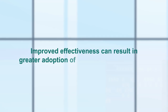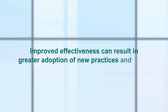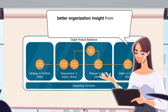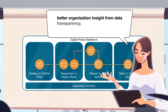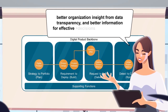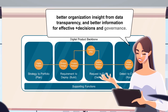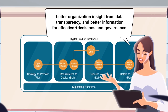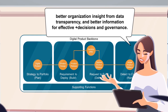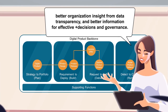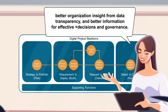Improved effectiveness can result in greater adoption of new practices and tools, better organisational insight from data transparency, and better information for effective decisions and governance. This helps organisations secure their digital value network and protect against security incidents that can impact their business outcomes.